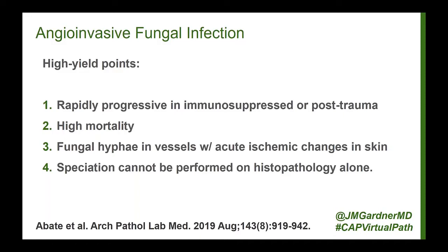We'll talk first about angioinvasive fungal infection, a very serious problem. Angioinvasive fungus usually occurs in immunosuppressed patients, and sometimes in the setting of severe motor vehicle accidents or other severe trauma. It is a rapidly progressive infection with a high mortality rate. Classically, you see fungal hyphae in the vessels, often with thrombus around them. They can also invade out of the vessels into the dermis, causing acute ischemia as vessels are blocked by fungus and fibrin.